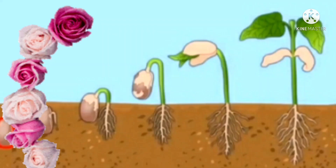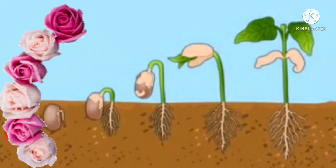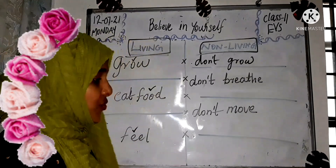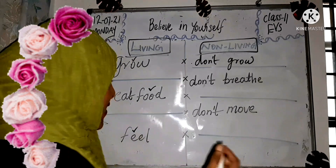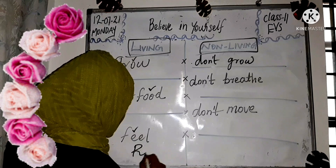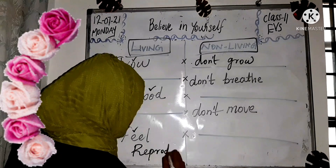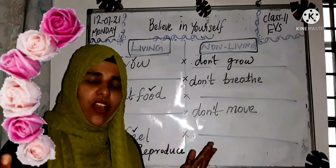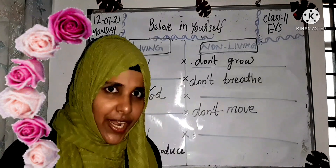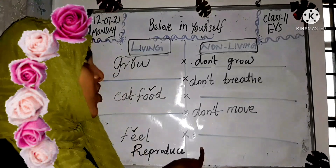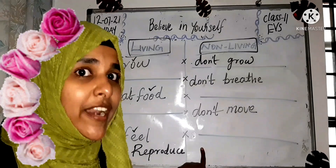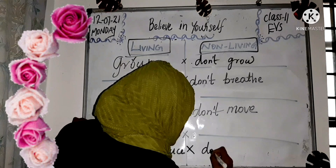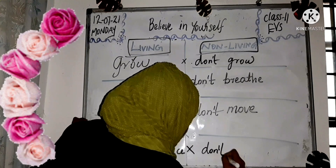So this is a special character of living organisms: living organisms can reproduce — they produce their young ones. That process is called reproduction. But non-living things do not reproduce.